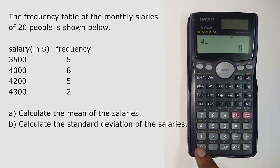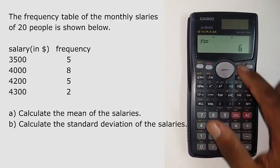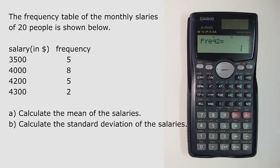Now type in the value 4000, click the M plus button, click the up arrow again and add its corresponding frequency which this time is 8. Click the equal to sign and then click again AC.